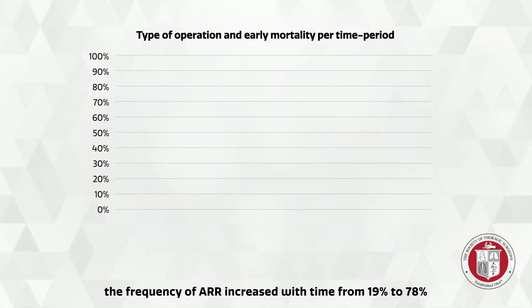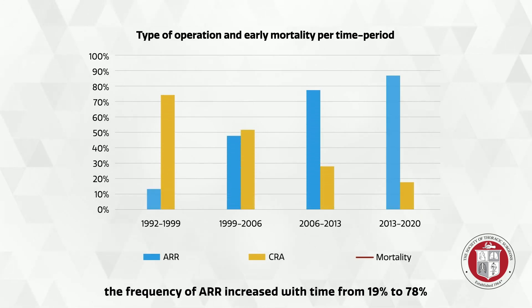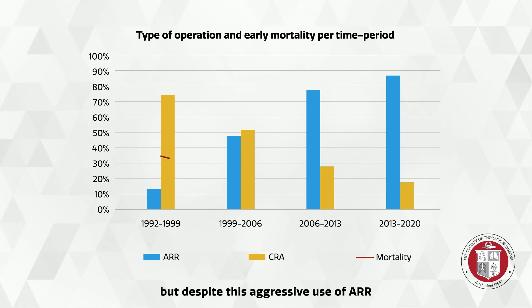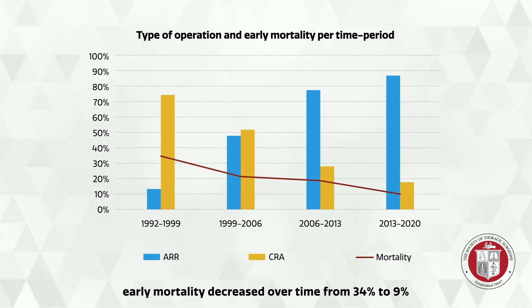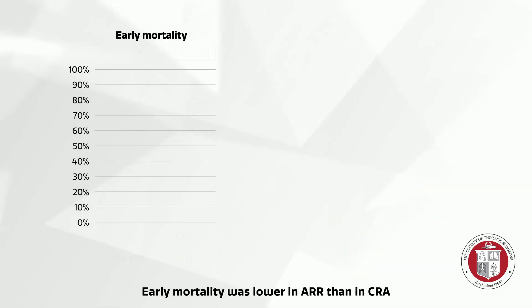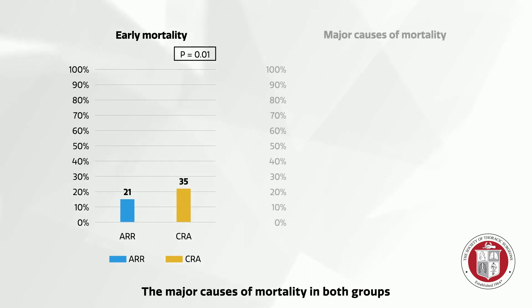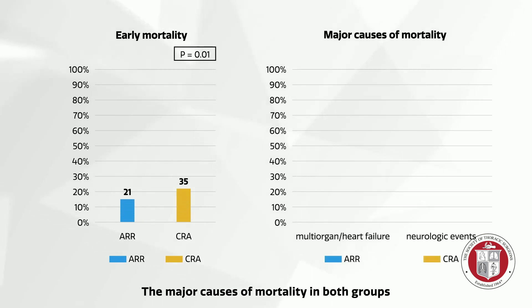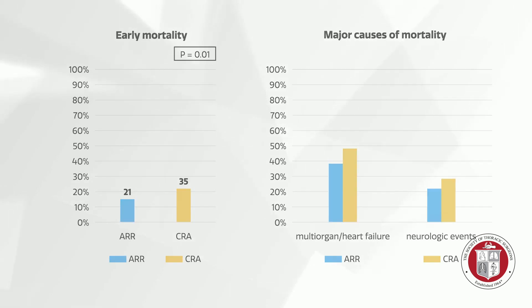Among all patients, the frequency of ARR increased with time from 19 percent to 78 percent, but despite this aggressive use of ARR, early mortality decreased over time from 34 percent to nine percent. Early mortality was lower in ARR than in CRA. The major causes of mortality in both groups were multi-organ or heart failure and neurologic events.